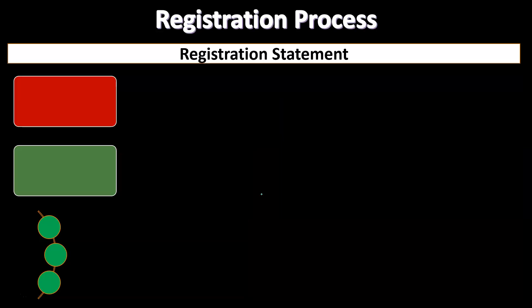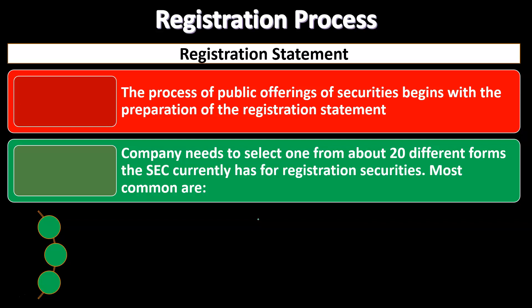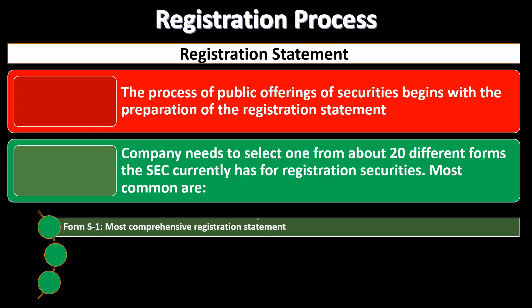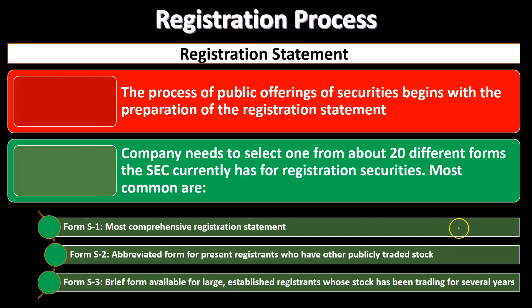The process of public offerings and securities begins with the preparation of the registration statement. Companies need to select one from about 20 different forms the SEC currently has for registering securities. The most common is Form S1, the most comprehensive registration statement. Form S2 is an abbreviated form for present registrants who have other publicly traded stock. Form S3 is a brief form available for large established registrants whose stock has been trading for several years.